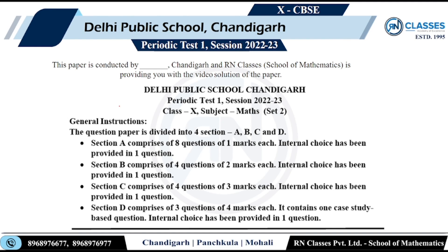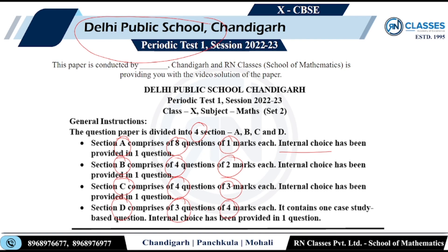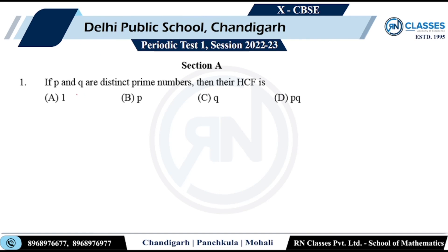Today we are going to discuss the CPS paper of CBSE Class 10. This paper was held a couple of days back. The question paper consists of four sections: Section A has 8 questions of 1 mark each, Section B has 4 questions of 2 marks, Section C has 4 questions of 3 marks, and Section D has 3 questions of 4 marks. Let's begin.